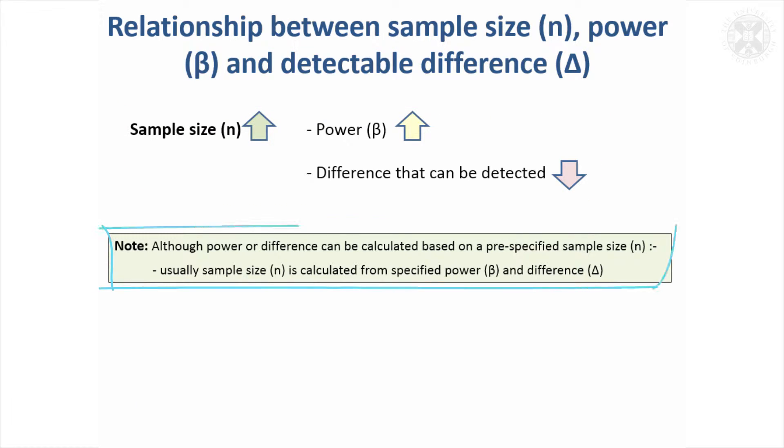Although you can base your calculations on calculating the power under different situations or the difference that you can detect under different situations, the better way to do it if you can is to decide what your power is, decide what the difference is, and get your sample size. Say okay, I need 15 mice per group and just run with that, although it's not always a practical way to proceed sometimes.